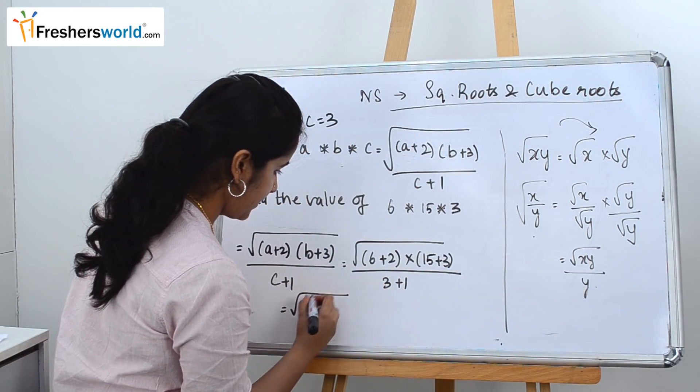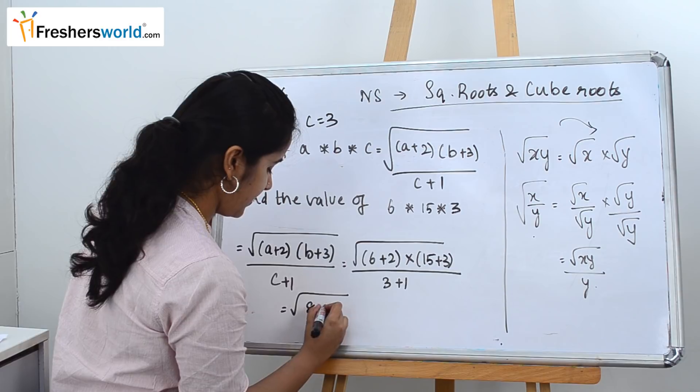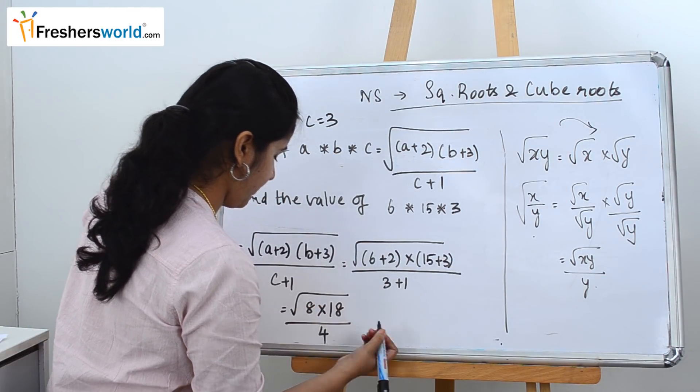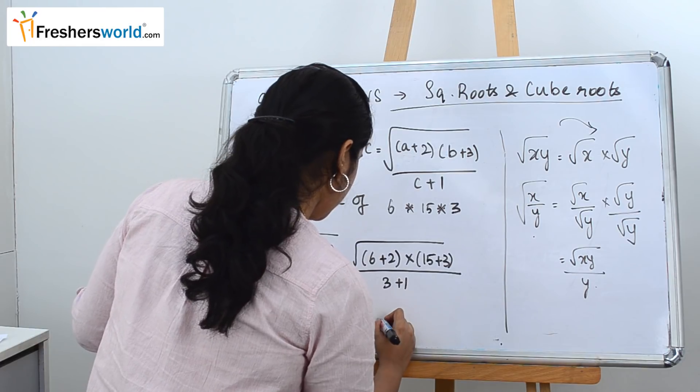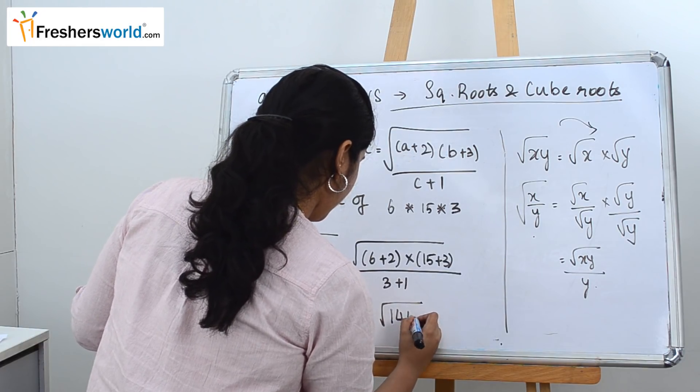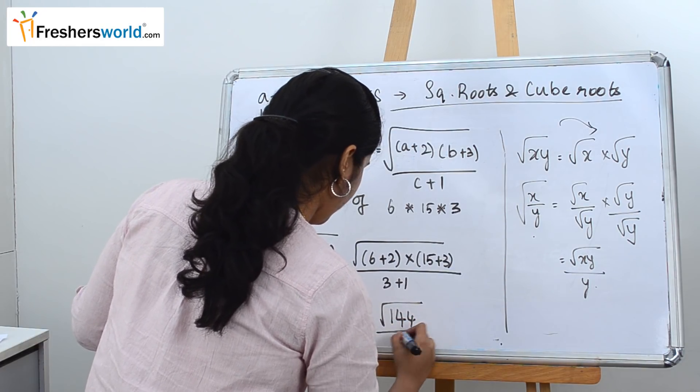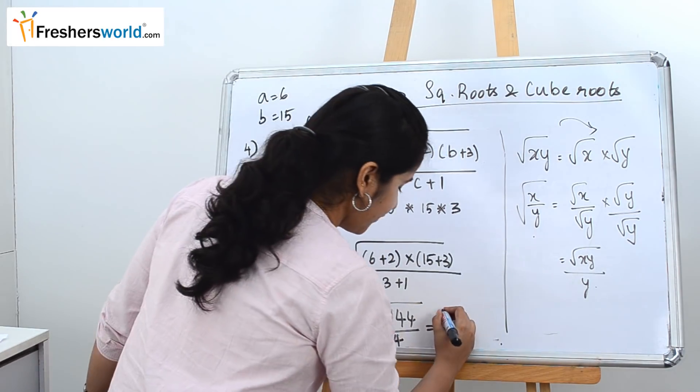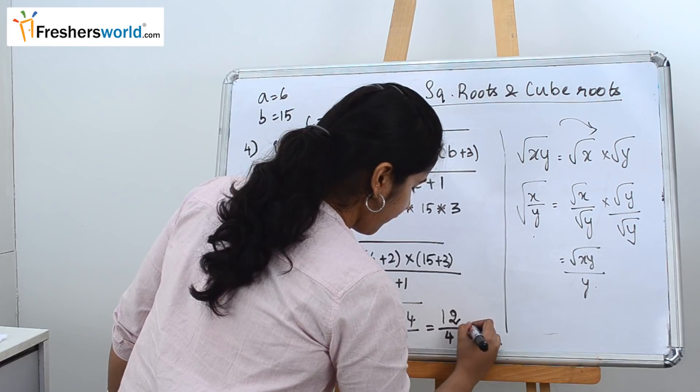So it becomes 6 plus 2 is 8 into 15 plus 3 is 18, divided by 4. It becomes 144 divided by 4. So 144 is nothing but square root of 12. So 12 divided by 4, which is equal to 3.